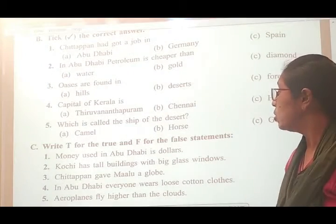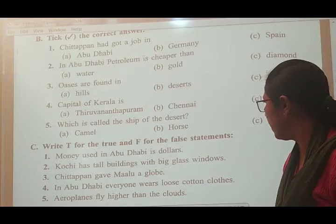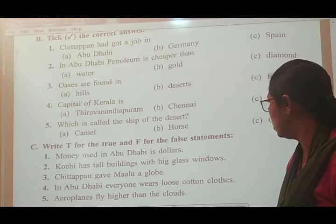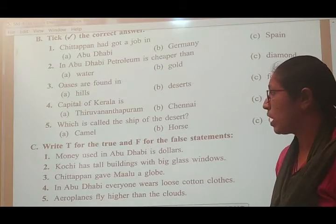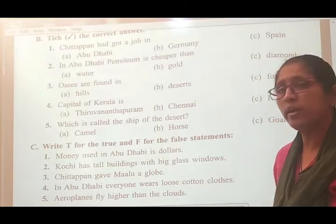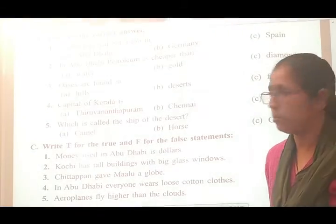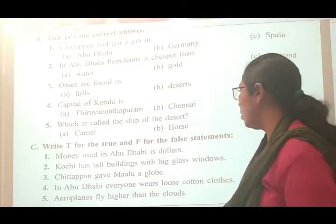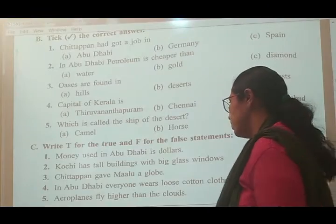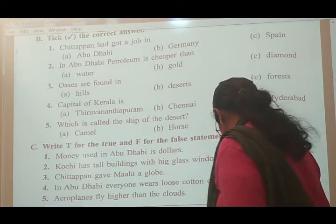True and false: for the false statement — money used in Abu Dhabi is dollar? No, dhiram — that is false. Kochi has tall buildings with big glass windows? No, tall buildings are in Abu Dhabi — that is false. Chintapan gave Malu a globe — yes, that is true.